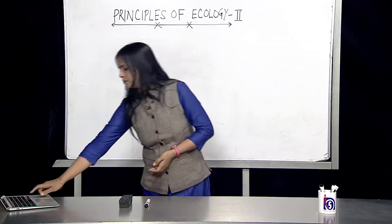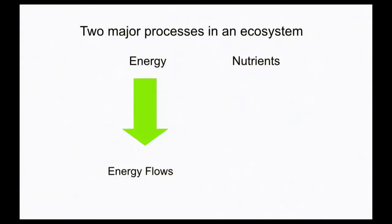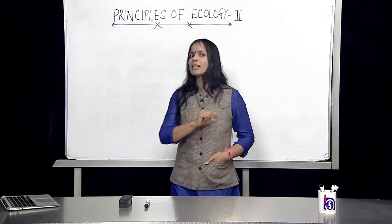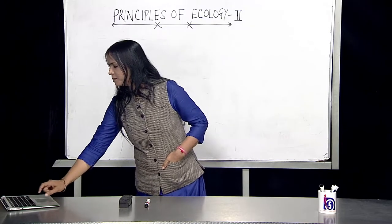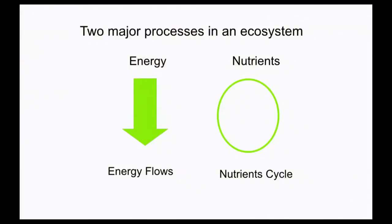When it comes to energy, the common term you'll see in your textbook is 'energy flow,' but when it comes to nutrients it is called 'nutrient cycle.' Notice the difference: flow versus cycle. That is a fundamental difference, and you can see it in the diagram on the slide.